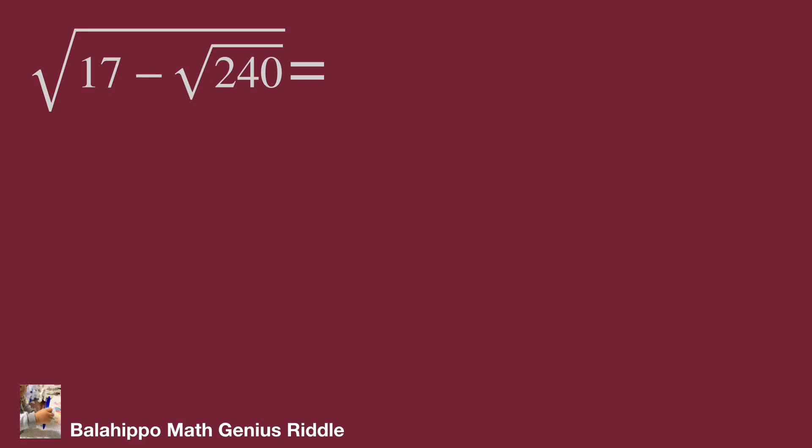The question: square root of 17 minus square root of 240. First, if we have to remove one square root, then the result should be a quantity squared.